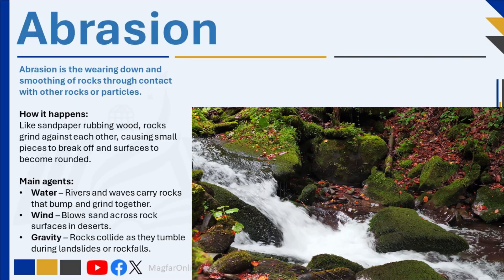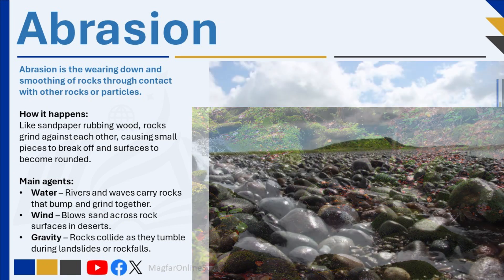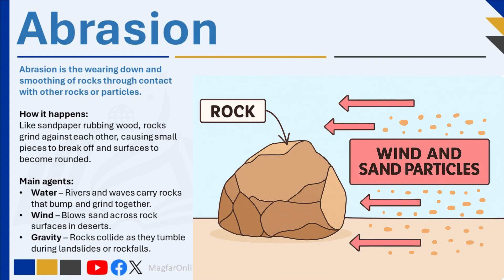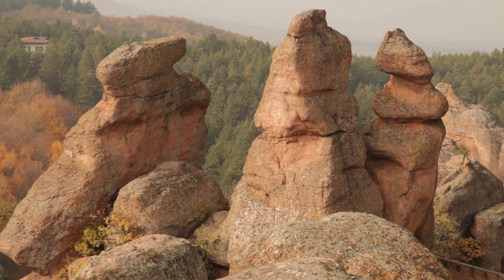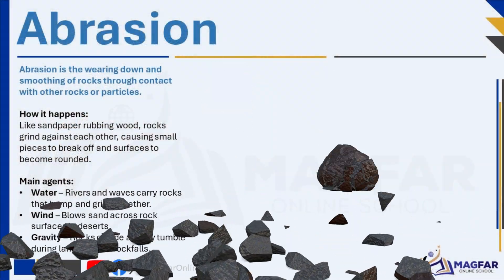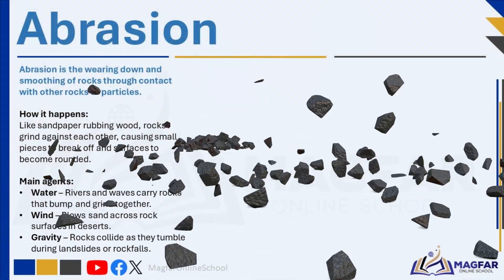This explains why river rocks are often smooth and rounded — they have been constantly abraded by the water's movement. In dry, sandy regions like deserts, wind abrasion occurs when sand particles are blown across rock surfaces. These particles act like tiny projectiles, gradually blasting and smoothing the rock over time. Wind abrasion can sculpt rocks into unusual shapes.